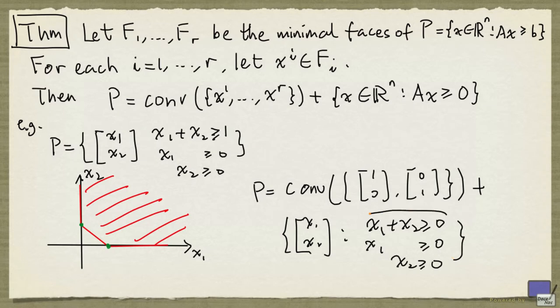But notice that this inequality is redundant, we don't really need this. So in effect, the characteristic cone of P is the first quadrant.